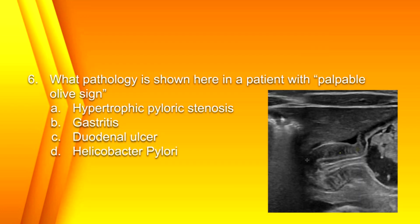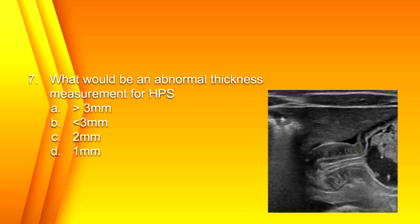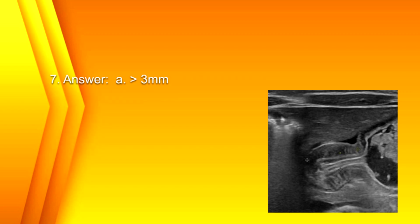Number 6. What pathology is shown here in a patient with a palpable olive sign? A. Hypertrophic pyloric stenosis, B. Gastritis, C. Duodenal ulcer, or D. Helicobacter pylori? The answer is A. Hypertrophic pyloric stenosis. What would be an abnormal thickness measurement for hypertrophic pyloric stenosis? A. Greater than 3 millimeters, B. Less than 3 millimeters, C. 2 millimeters, or D. 1 millimeter? The answer is A. Greater than 3 millimeters.